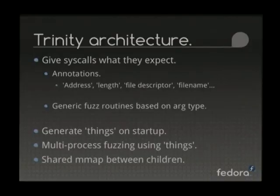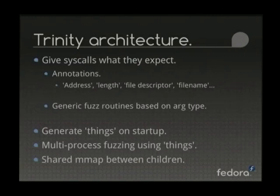The basic way it works: before you can call a system call and give it what it expects, you need to annotate every single system call the kernel knows — all 300-and-something of them — and annotate every argument type to say this is an expected length, this is an address, this is a file descriptor. Then I have a bunch of routines that hand those out. On startup, it creates a bunch of file descriptors and network sockets, pulls a bunch of files from /dev, /proc, and /sysfs, and over the lifetime of the tool running, it hands those out randomly when it wants a file descriptor.